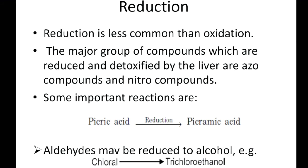The second type of phase 1 reaction is reduction, which is less common compared to oxidation. The major compounds reduced are azo compounds and nitro compounds. For example, picric acid is converted into picramic acid by reduction, and chloral, which is an aldehyde, is converted into trichloroethanol.